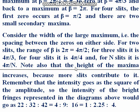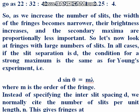It is important to note that the height of the maximum increases as you increase the number of slits — meaning the intensity of the principal maximum increases because more slits contribute to it. Remember that intensity goes as the square of the amplitude, so the intensity of the bright fringes goes as 2², 3², 4², giving a ratio of 4:9:16. As we increase the number of slits, the width of the fringes becomes narrower, their brightness increases, and the secondary maxima become proportionally less important.